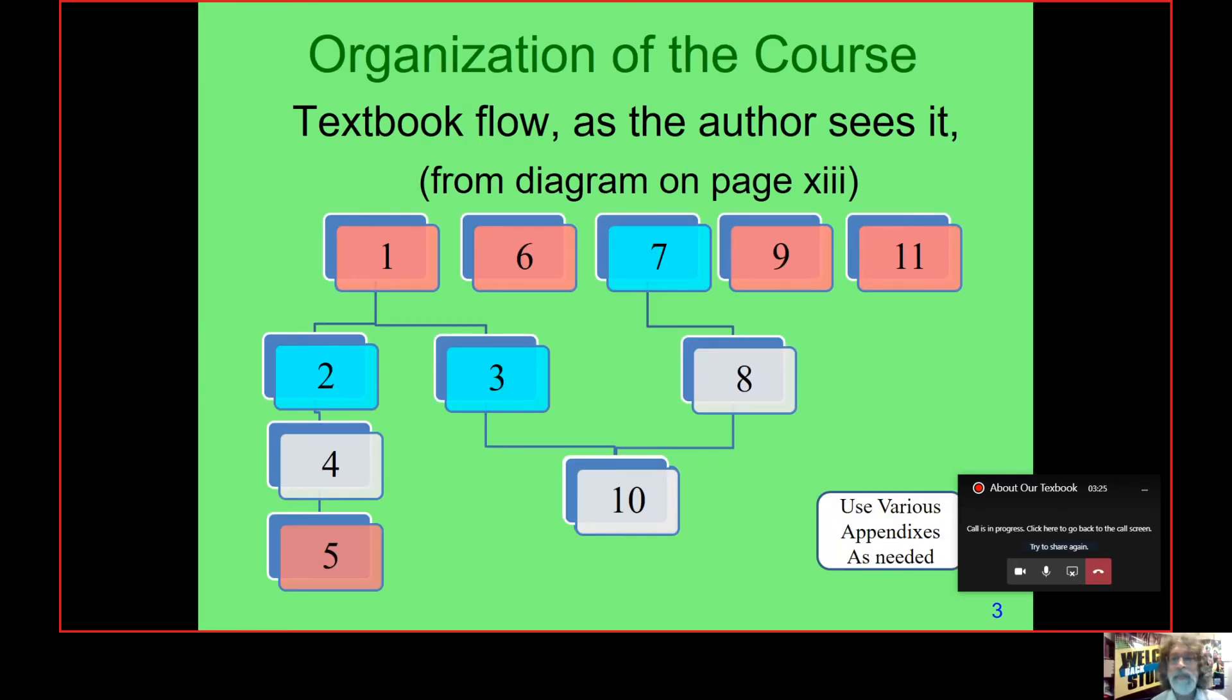Now, if we flip up to page XIII in our textbook, we'll see this flowchart. And this is how the textbook author sees the layout of the book. And if you look across there, you can see the 1, 6, 7, 9, and 11. Those are all the chapter numbers.